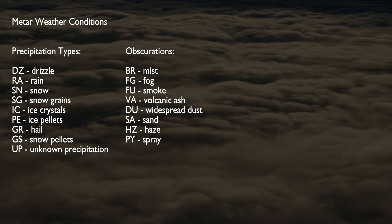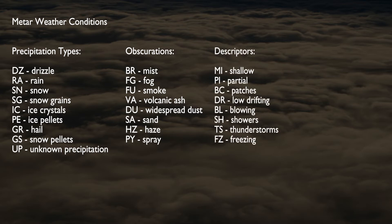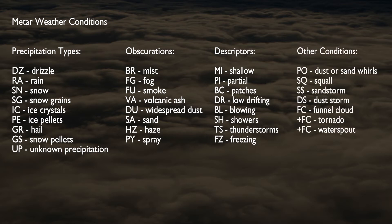These weather conditions have several descriptors, which are shallow, partial, patches, low drifting, blowing, showers, thunderstorms, and freezing. Other possible METAR weather conditions include dust or sand whirls, squall, sandstorm, dust storm, funnel cloud, tornado, or waterspout.